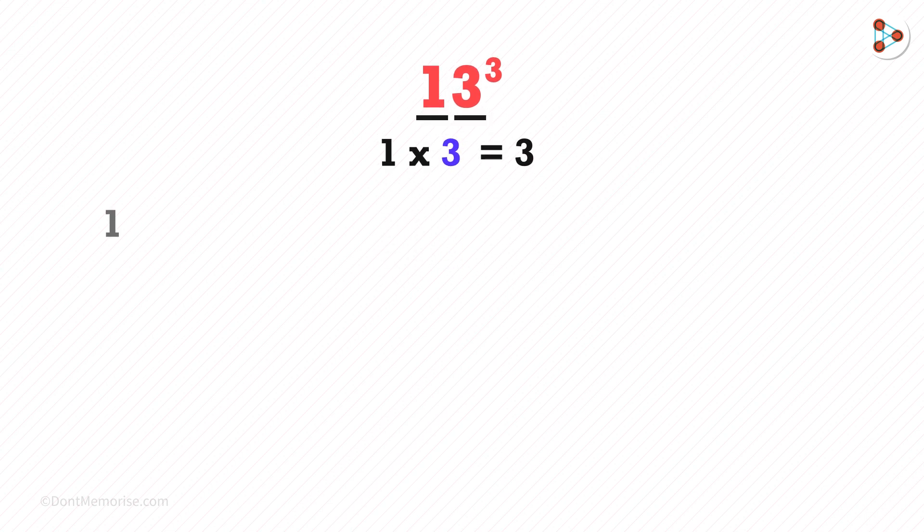So on the left side we will write 1 cubed. After that, 1 cubed multiplied by 3, then 1 cubed multiplied by 3 multiplied by 3, and then we write this.